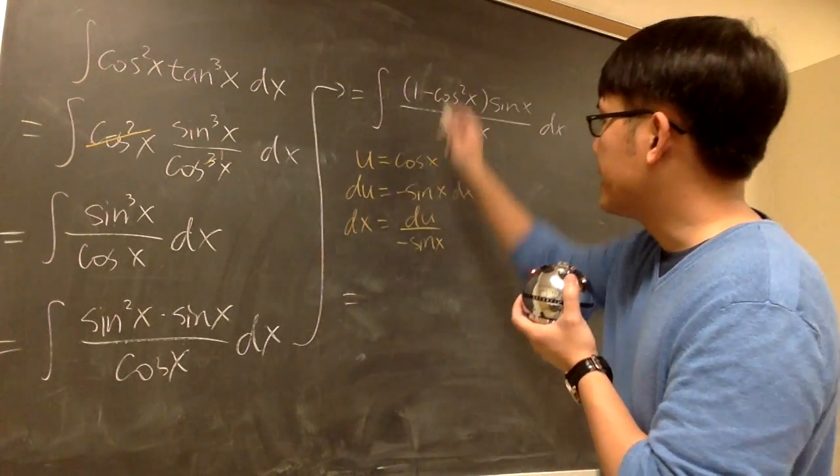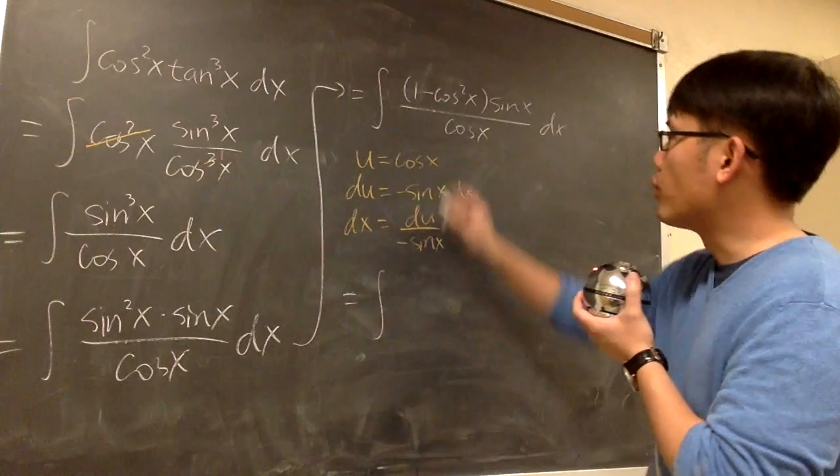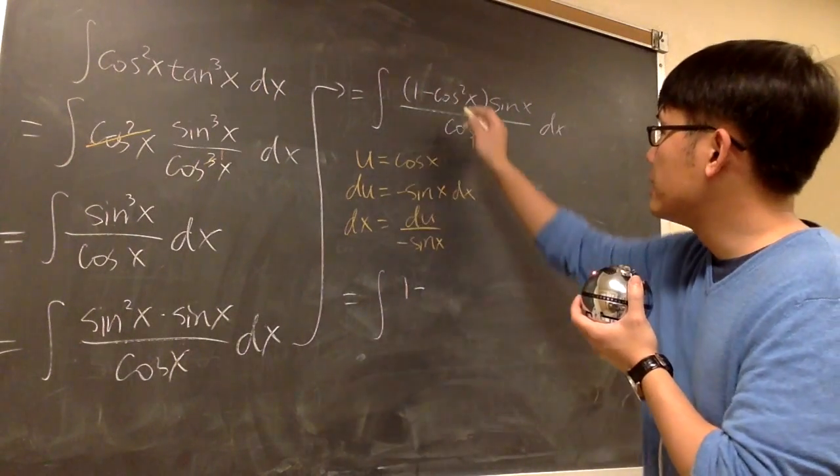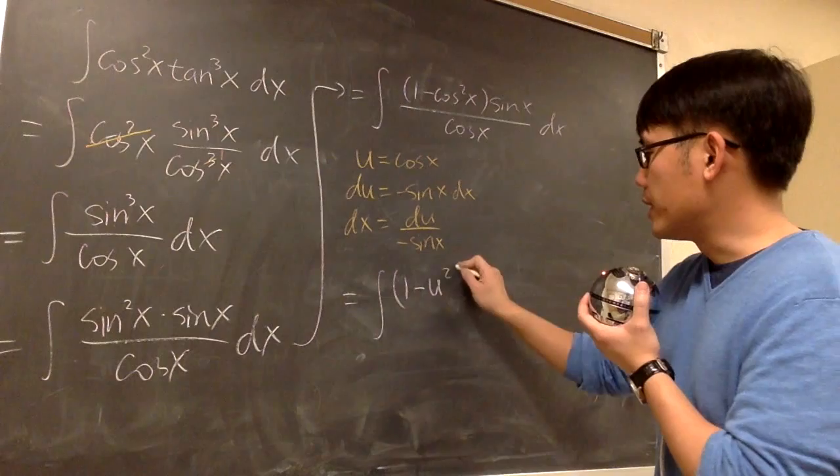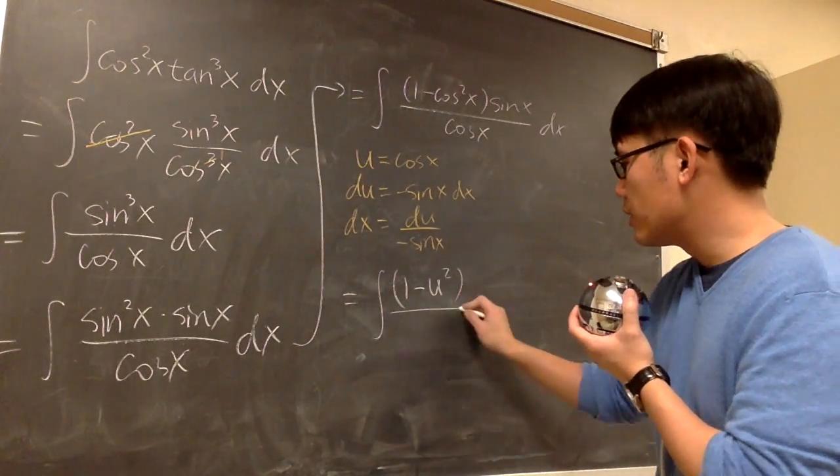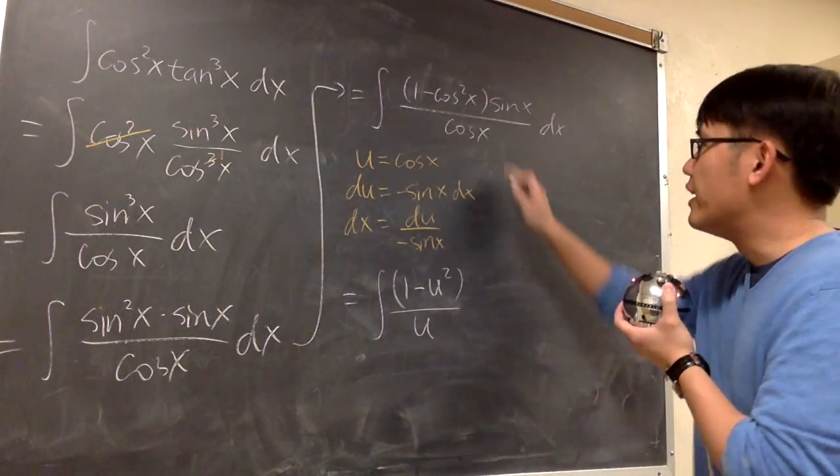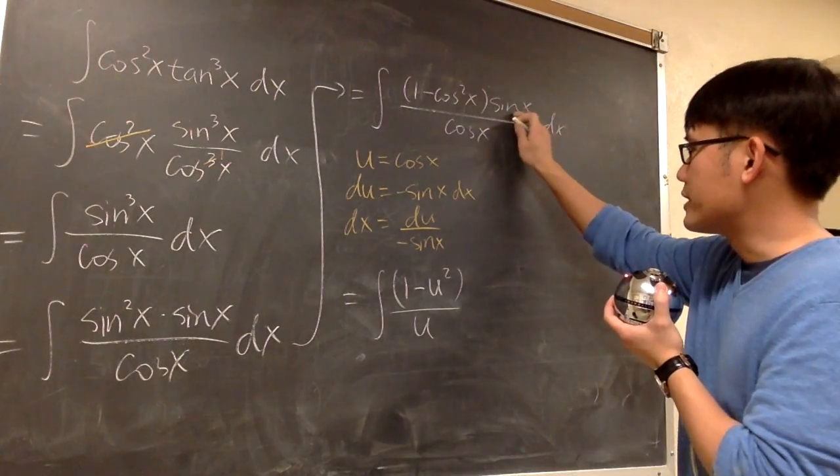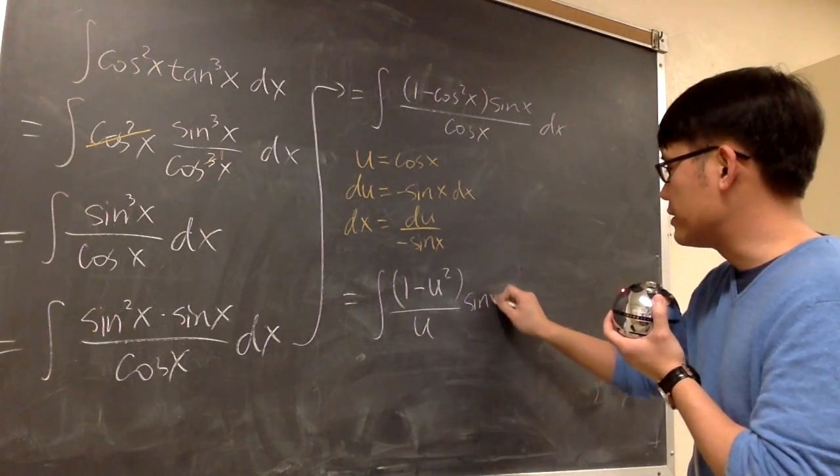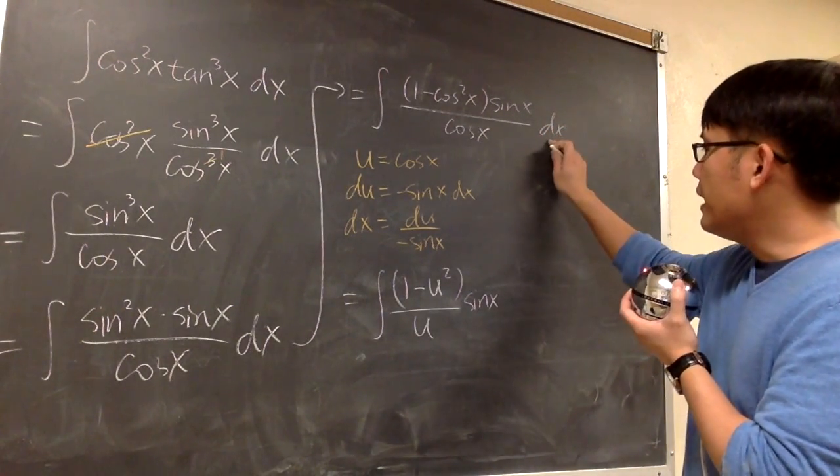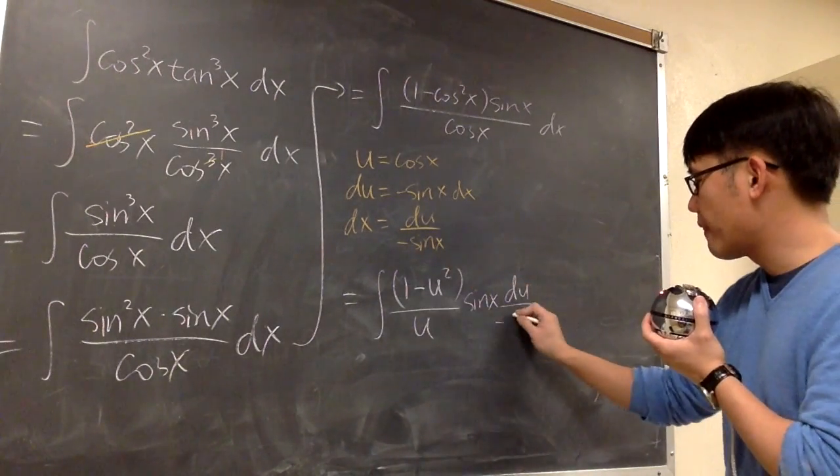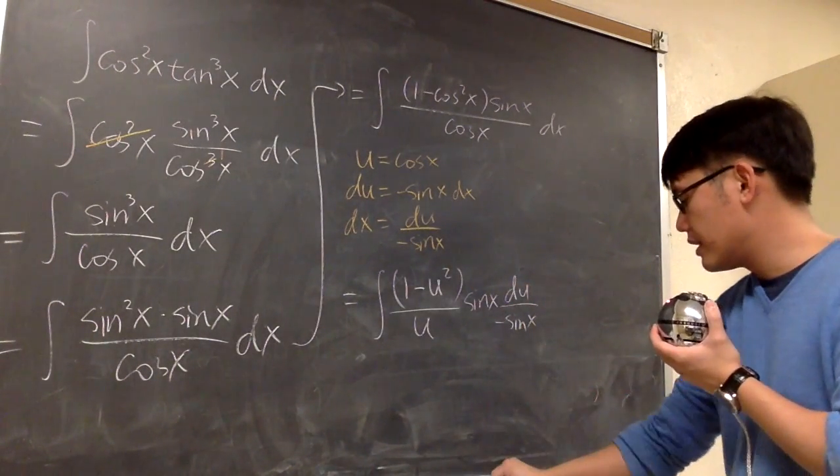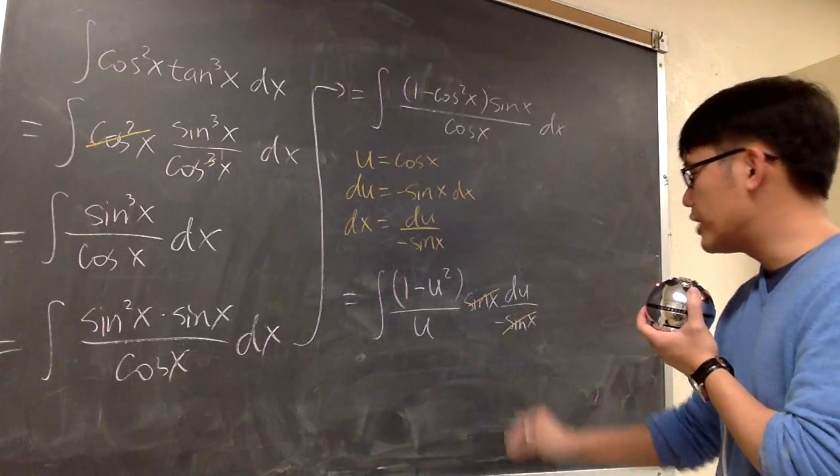So here, I can look at this integral as this. Integral of 1 minus cosine squared becomes u squared, and that will be in the parentheses, over u, because that's cosine. And then sine x times, well sine x, let me just leave it because I'll show you the cancellation. The dx is du over negative sine x, and then the sine x can cancel out, right?